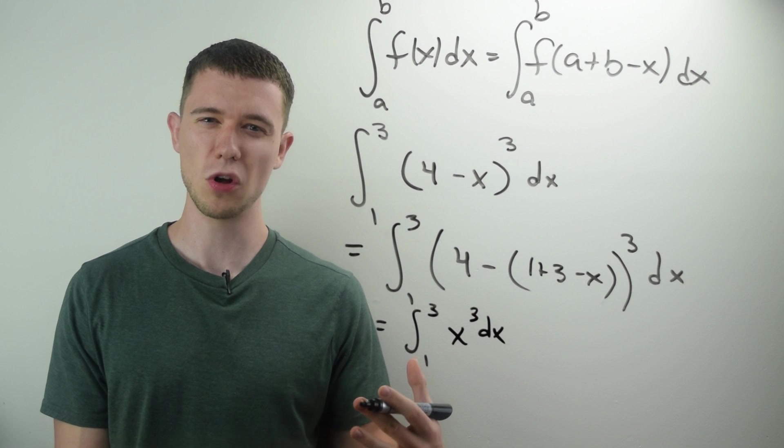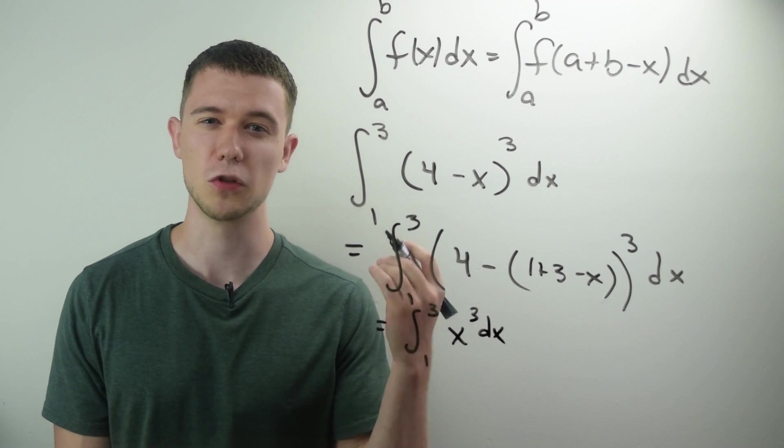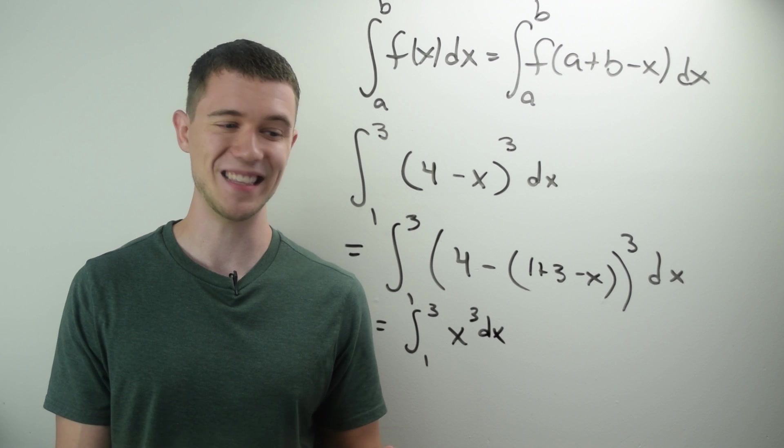And this is a similar result to what you would get if you did a u substitution. It's just much faster. And so now this is an easy thing to compute, right?